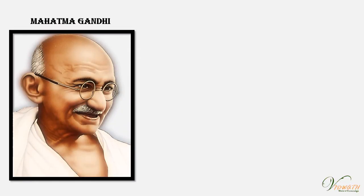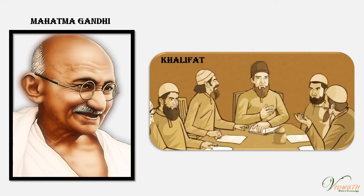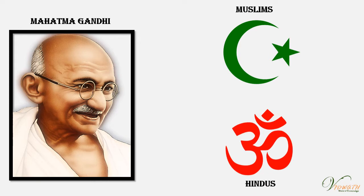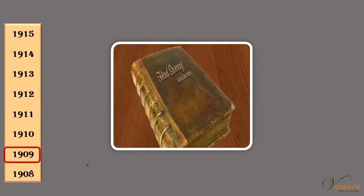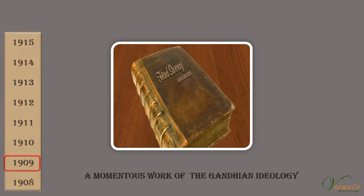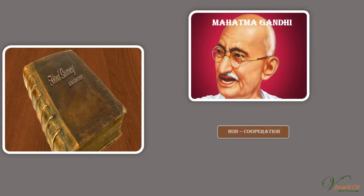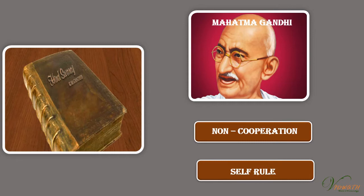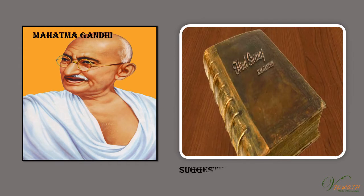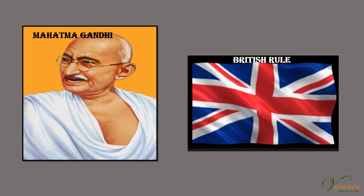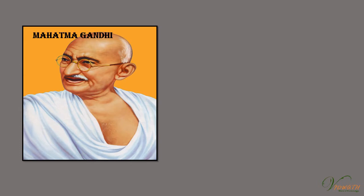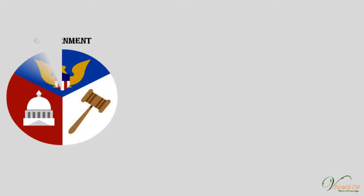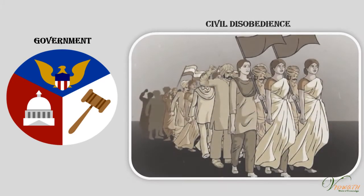Mahatma Gandhi realised that the Khilafat issue would be the most favourable step to invite Muslims and Hindus for the common cause of a national movement. He therefore launched a non-cooperation movement in support of Khilafat. In his book Hind Swaraj (1909), Gandhi suggested that if Indians resolved not to cooperate, British rule would get abolished, paving the way for Swaraj or self-governance. If the government used repression, a full civil disobedience campaign would be launched.